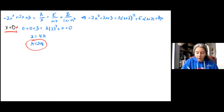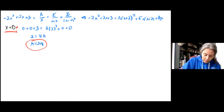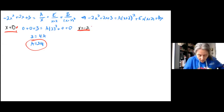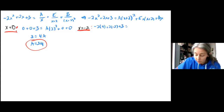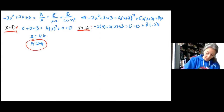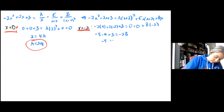Our next zero comes from x plus 2 — it equals zero when x equals negative 2. Plugging in x equals negative 2: negative 2 times (negative 2) squared is positive 4, plus 2 times negative 2 plus 3, equals 0 plus 0 plus B times negative 2. So negative 8 minus 4 plus 3 equals negative 2B — that's negative 9 equals negative 2B — so B equals 9 over 2.